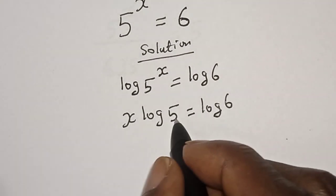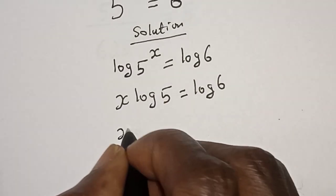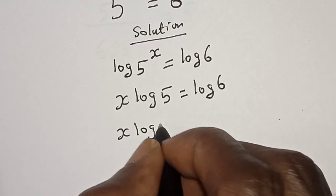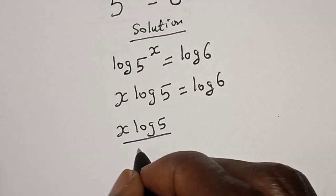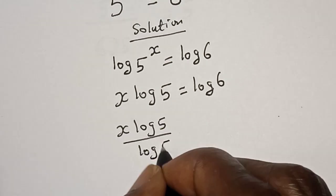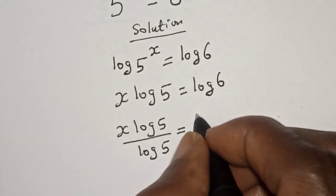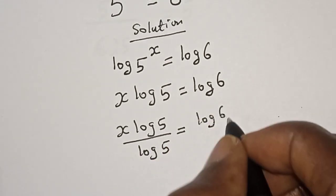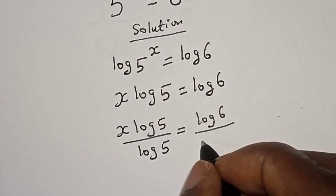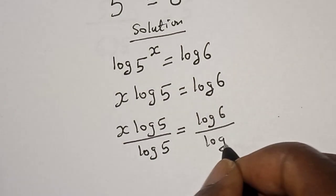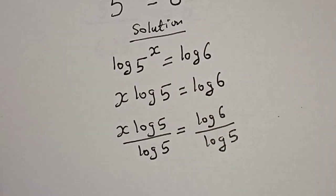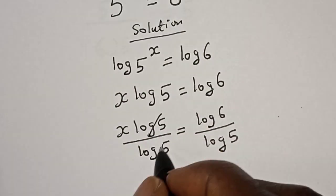Now let's divide both sides by log 5. s log 5 divided by log 5 is equal to log 6 divided by log 5. So I will cancel this.